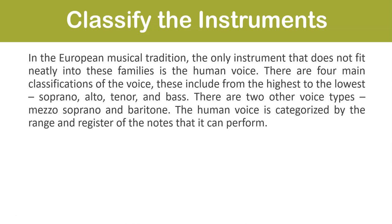In the European musical tradition, the only instrument that does not fit neatly into these families is the human voice. There are four main classifications of the voice — from highest to lowest: soprano, alto, tenor, and bass. There are two other voice types: mezzo-soprano and baritone. The human voice is categorized by the range and register of the notes it can perform. Soprano, mezzo-soprano, and alto are female voices, while tenor, baritone, and bass are male voices.